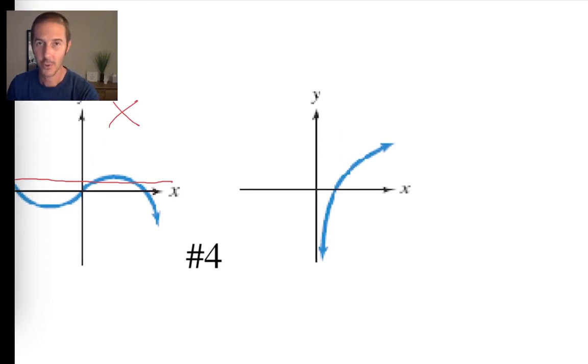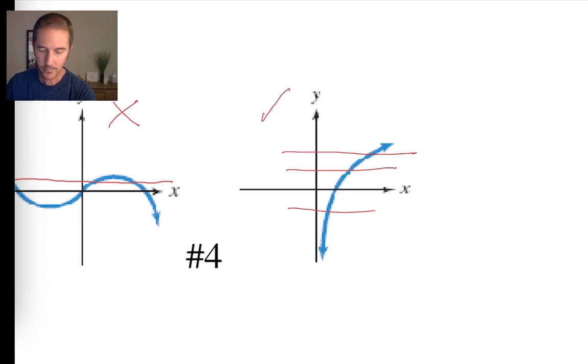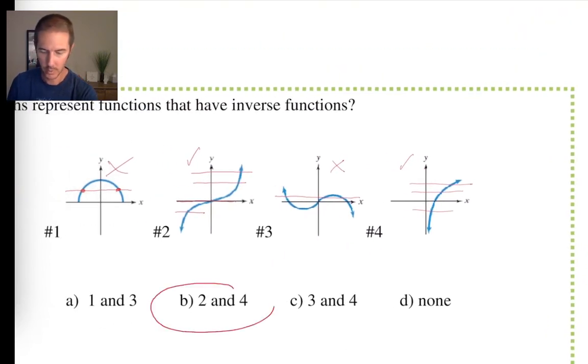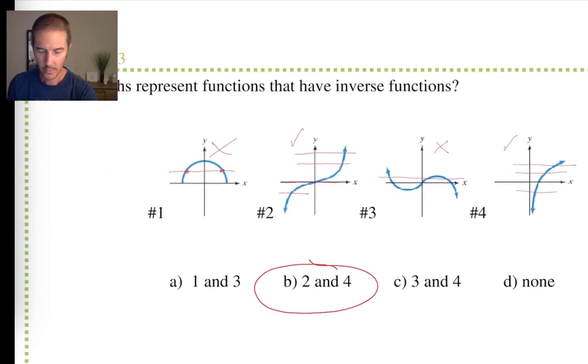This graph is the graph of a function because it passes the vertical line test. Crosses only at one point. This graph passes the horizontal line test. Therefore, this graph has an inverse that's also a function. So it looks like two and four are the graphs of functions that also have inverses that are functions.